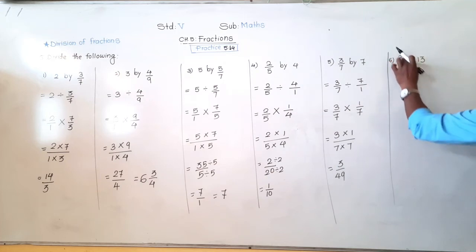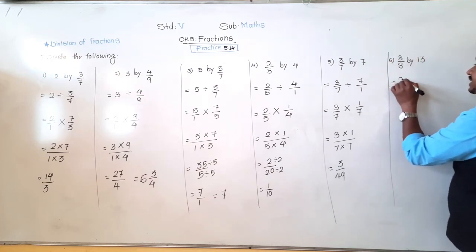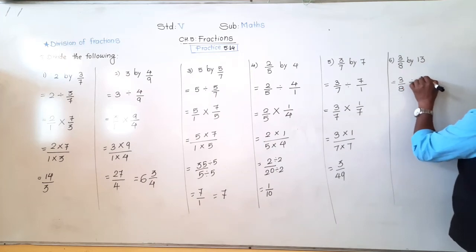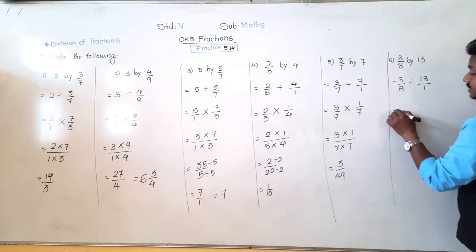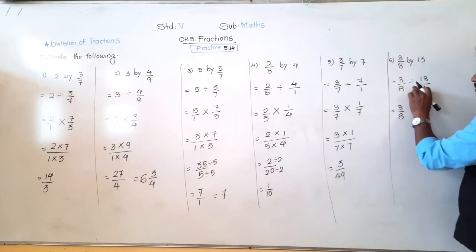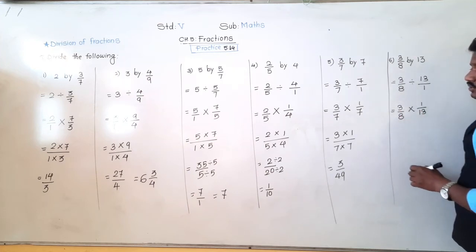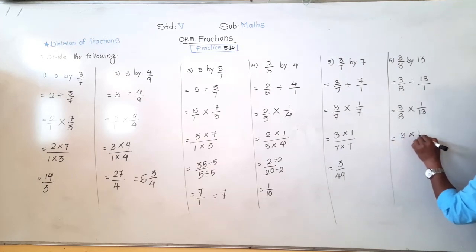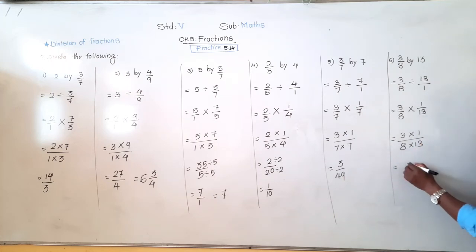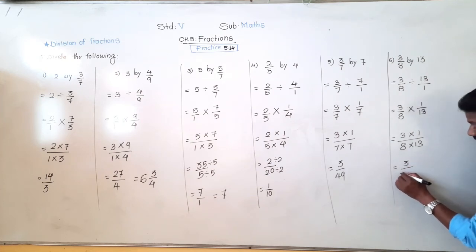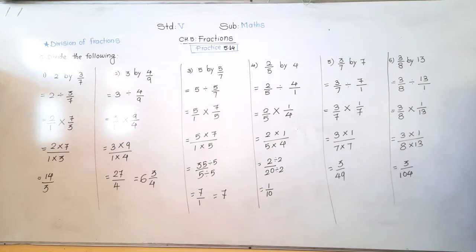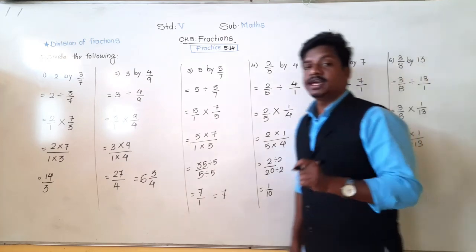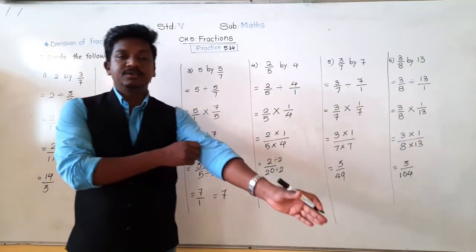Next: 3 upon 8 divided by 13. That is 3 upon 8 divided by 13. Now multiply numerator with numerator and denominator with denominator: 3 × 1 = 3 upon 8 × 13 = 104. This is the answer: 3 upon 104.